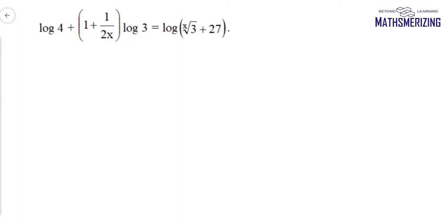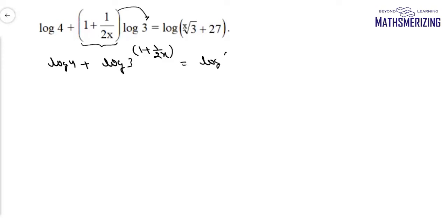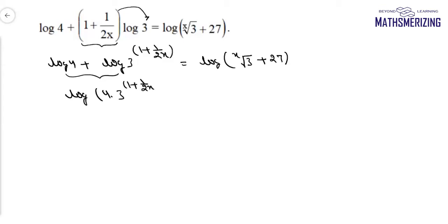I'll take the expression 1 plus 1 upon 2x to the power of 3. So I can write it as log 4 plus log 3 to the power 1 plus 1 upon 2x, and this equals log x root of 3 plus 27. Using the property log m plus log n, I can write it as log of 4 into 3 to the power 1 plus 1 upon 2x, equals log x root of root 3 plus 27.